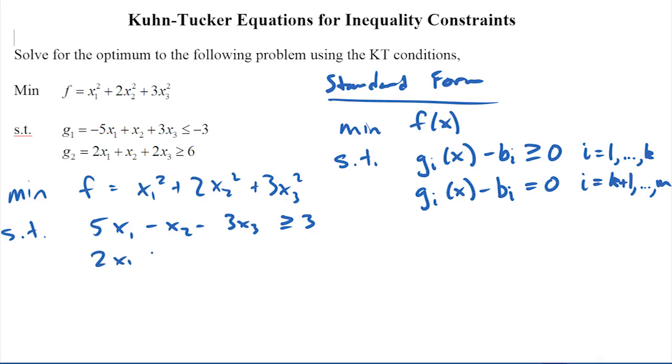Okay, so I have greater than or equal to three, so I just multiply through by a negative, switch the sign on that, and put it into the standard form. I have g1 and g2.